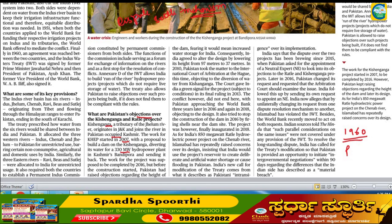The Rattle dam project involves significant power generation. One component has a 1.5 megawatt capacity. The dam construction is nearing completion with a deadline approaching. The height of the dam is a key parameter in Pakistan's objections. Pakistan's order concerns the dam being in a specific geographical location affecting downstream water flow.